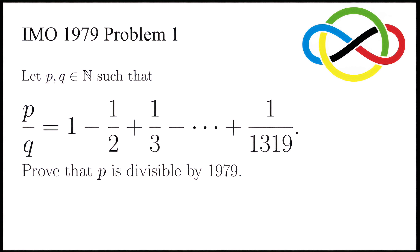Let's take a look at this problem, taken from the International Mathematical Olympiad 1979. It says, let p and q be natural numbers such that the fraction p over q equals the given alternating series. Prove that p is divisible by 1979.